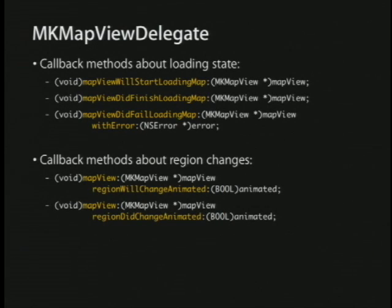For example, if you're writing your own Yelp-ish app and you want to show all the sushi restaurants on the map, you get the region from the map view, you go to the internet to your special service, and you fetch all of the locations of all the sushi restaurants that fall in that region. If your user then goes and pans several regions over, you can then get the new region and get all the sushi locations and plot those on the map.